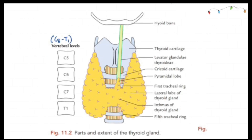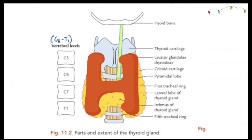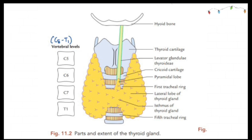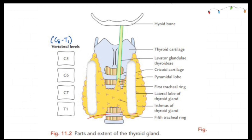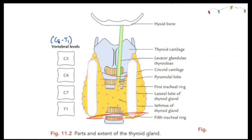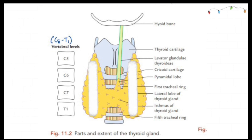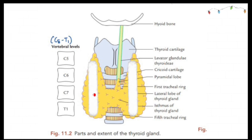The thyroid gland is head-shaped. This shape is formed by two lateral lobes — the left and right lobe of the thyroid gland. An important point to remember is that the extent of these lateral lobes is until the fifth or sixth tracheal rings. These lateral lobes are connected by a horizontal isthmus.